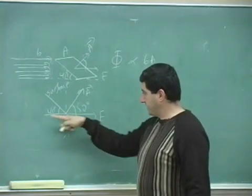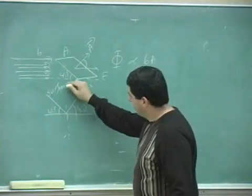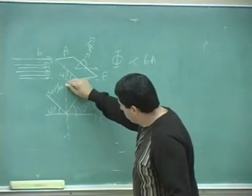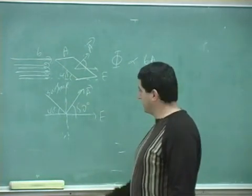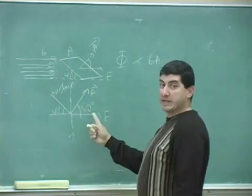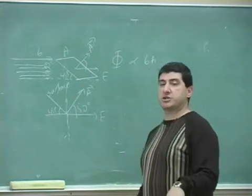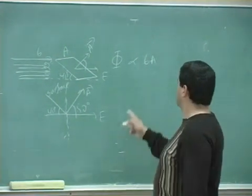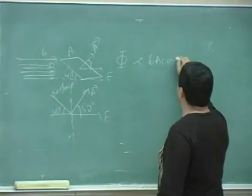This is the surface, this is the horizontal, 40, then you do the normal line to the electric field, 40, 50, 40, 50. So the angle between the area vector and the electric field is 50. So you take 6A cosine of 50.